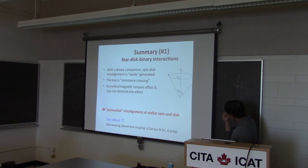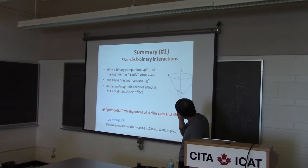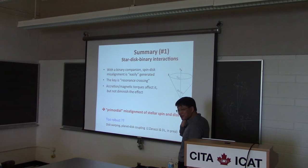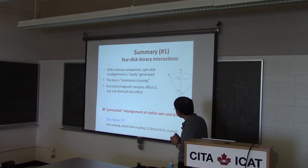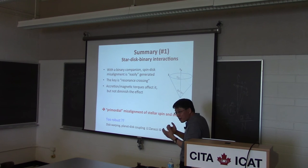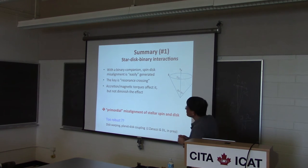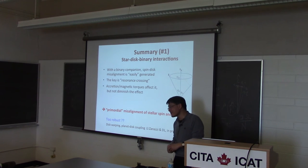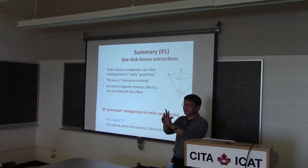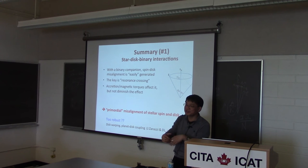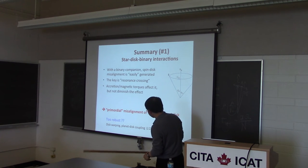So that's all I want to say about the first part of the talk. Here's the summary: with a binary companion, spin-disk misalignment can be easily generated. The key is a resonance crossing — as I explained, it's a secular spin-orbit resonance. The accretion and magnetic torques can affect it but not diminish the fundamental effect. This is one of the ways of producing primordial misalignment between the protoplanetary disk and the protostar. I'm a little worried this seems too robust, because you just need three vectors and don't even need large initial misalignment.